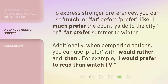To express stronger preferences, you can use 'much' or 'far' before 'prefer,' like 'I much prefer the countryside to the city,' or 'I far prefer summer to winter.' Additionally, when comparing actions, you can use 'prefer' with 'would rather' and 'than.' For example, 'I would prefer to read than watch TV.'